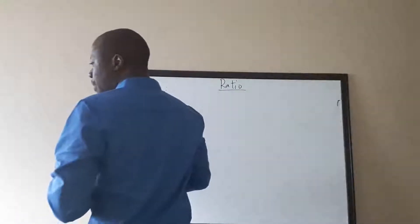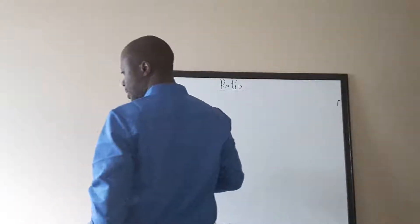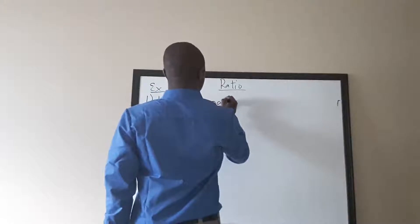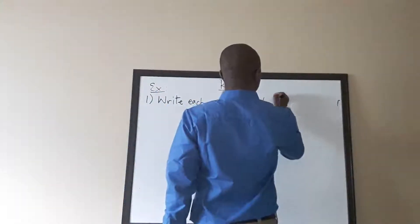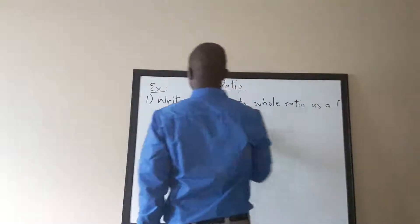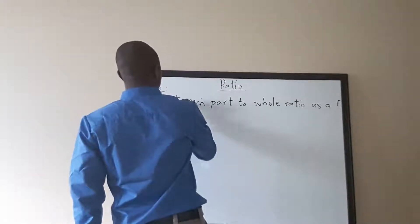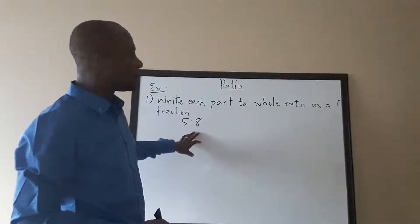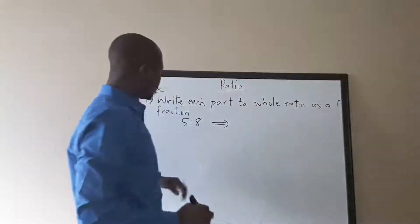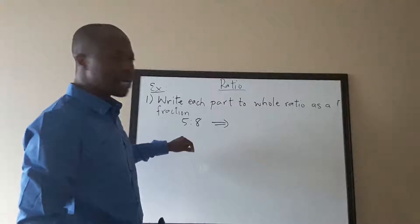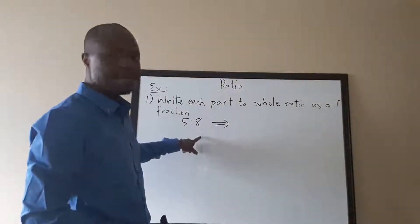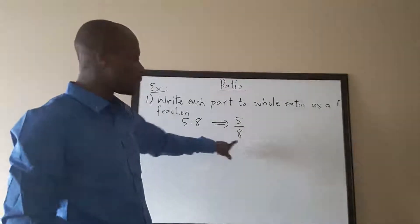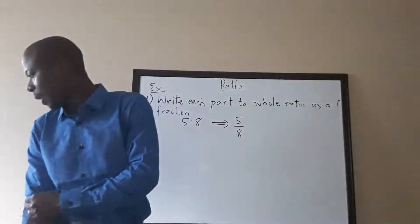The example says to write each part-to-whole ratio as a fraction. So here we're comparing 5 to 8 — the one on the left goes on top and the one on the right goes on the bottom, giving us 5 over 8.